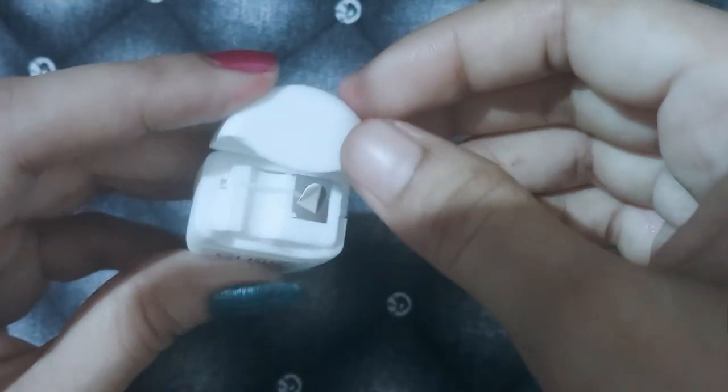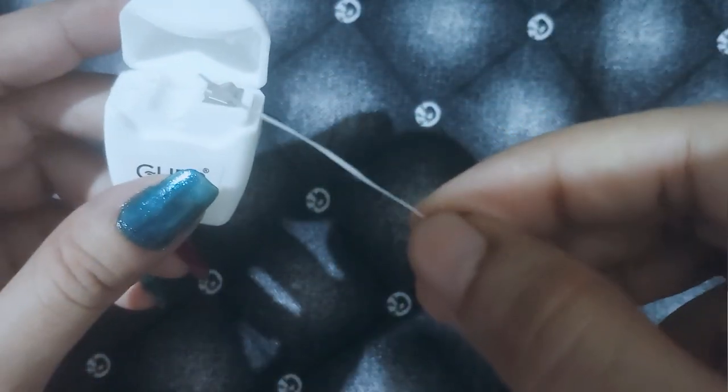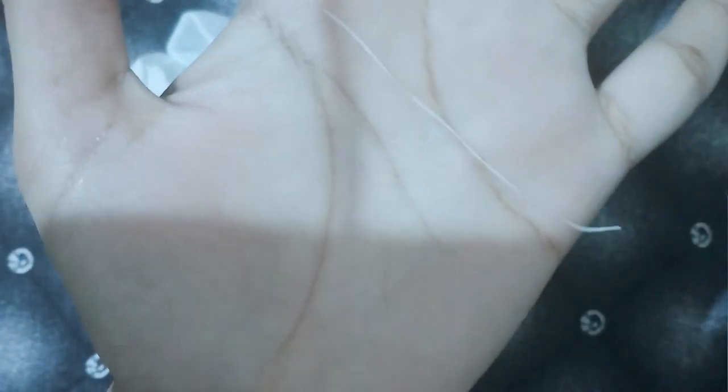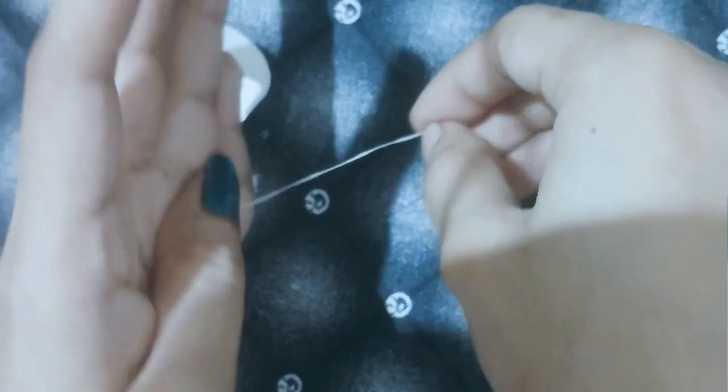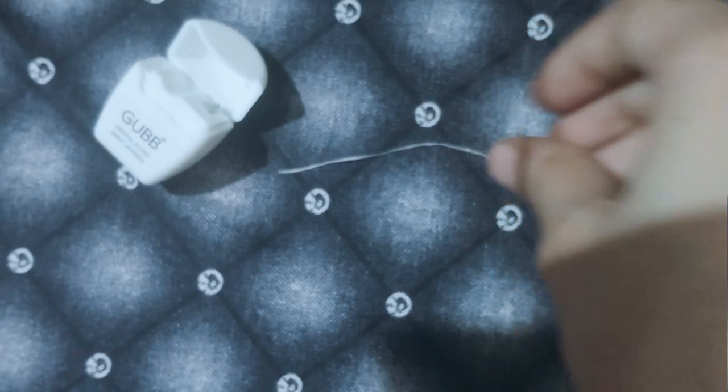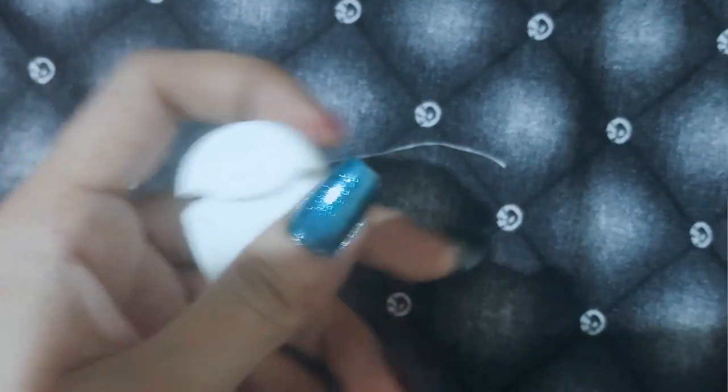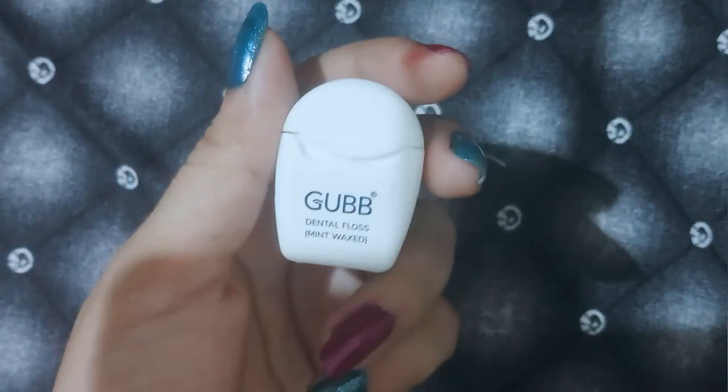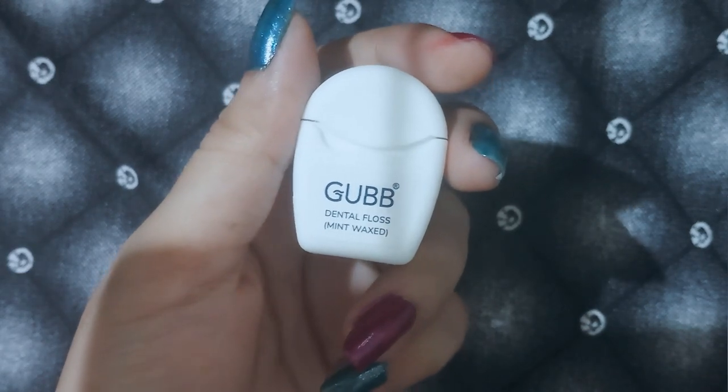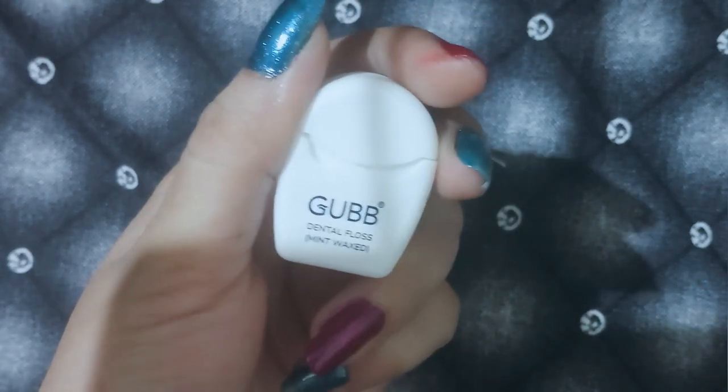Reaches where toothbrush fails. Wax thread for smooth cleansing action. It gives minty breath while cleansing. Gentle on gums and harsh on bacteria. This mint floss protects the teeth against plaque and cavity. The floss doesn't tear or break during usage.